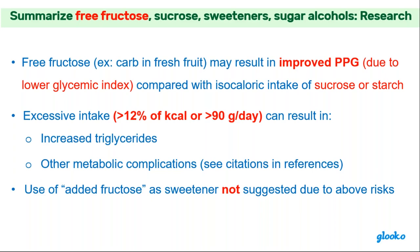Free fructose — the fructose in natural plant foods like fruits and vegetables — when the carb at a meal comes from free fructose, there is an improvement in post-meal blood glucose compared to eating carbs from other foods like rice, pasta, bread, or beans. An equal amount of fructose from fruits and vegetables compared to other carbs shows improvement in post-prandial blood glucose.